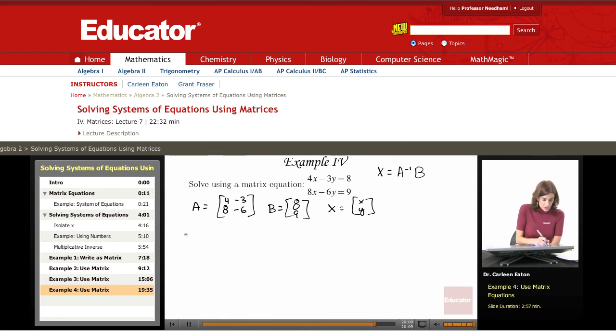I need A inverse. A inverse is 1 over the determinant of A, AD minus BC, times the matrix D, negative B, negative C, A.